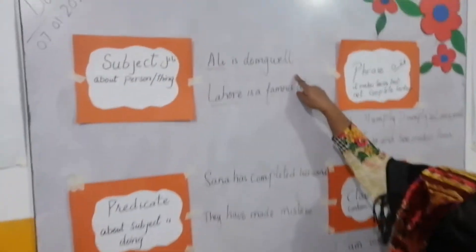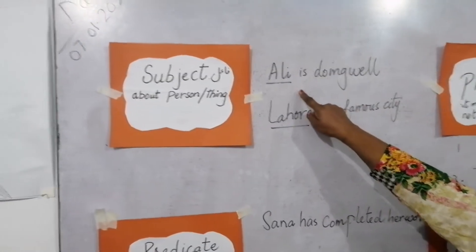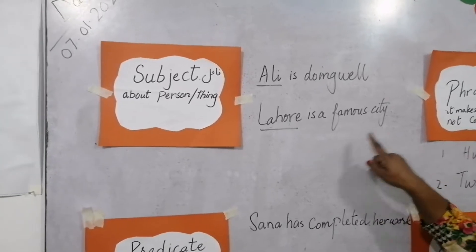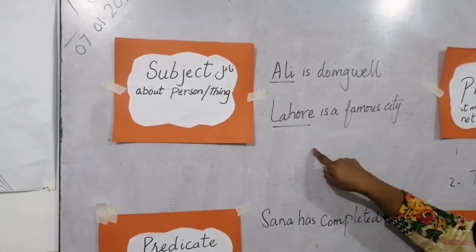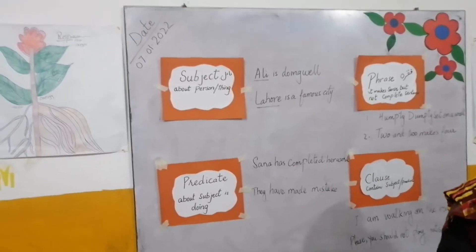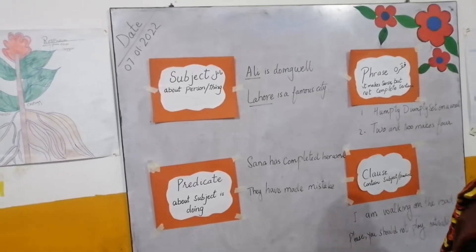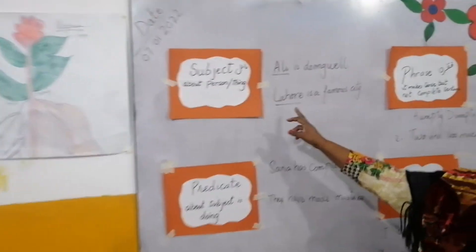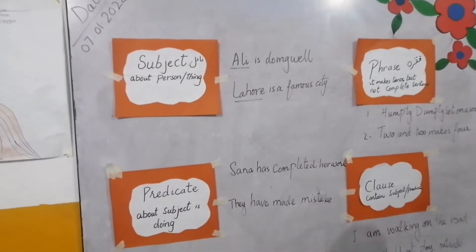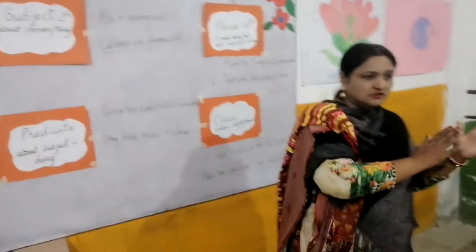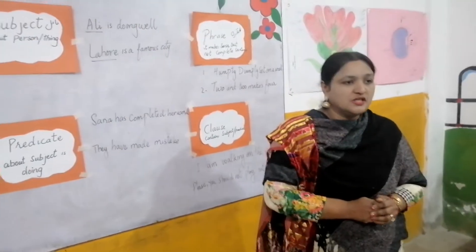For example, 'Ali is doing well' — Ali is called the subject. 'Lahore is a famous city' — Lahore can be considered the subject. So a subject can be a person, a thing, or a place for which we are talking about. It tells about the person or thing that the whole sentence is about. This is called the subject.